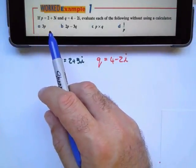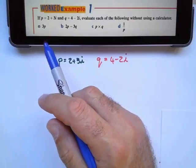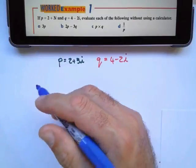If p equals 2 plus 3i and q equals 4 minus 2i, evaluate each of the following without using a calculator.